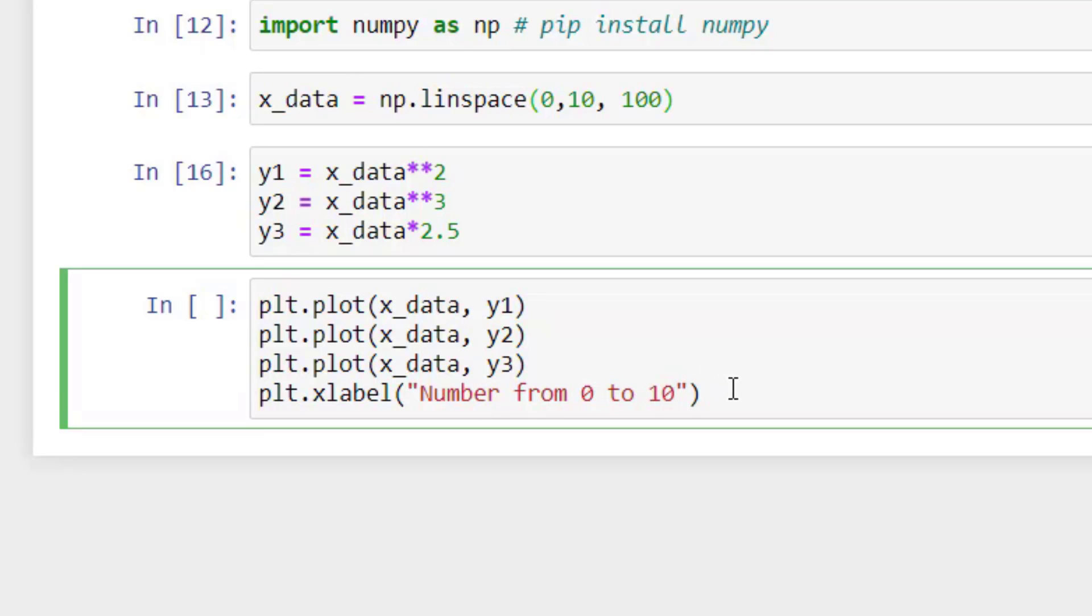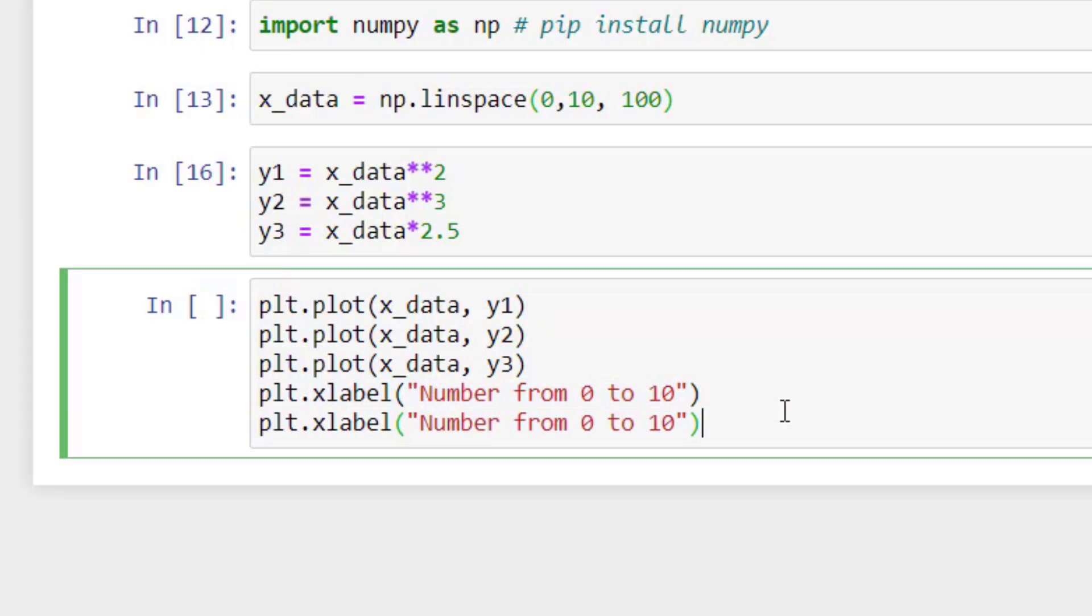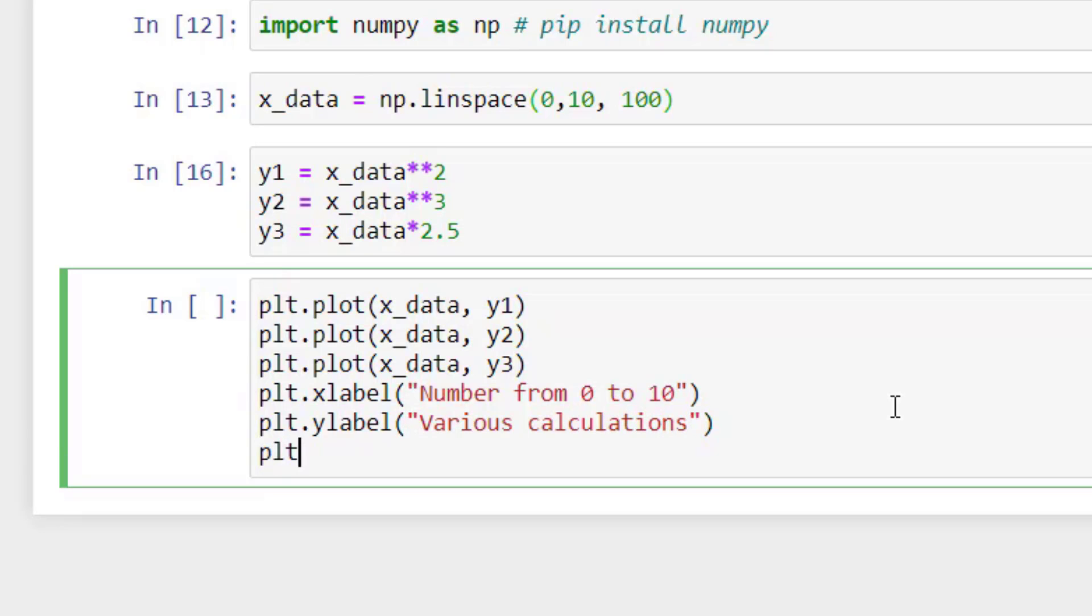In the x label and I'll just copy the same and I'll create y label. So I'll just change it to y here and let's say this is various calculations. And then we'll just simply display the data plt.show. Good to go. Let's see what is the output.